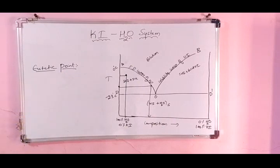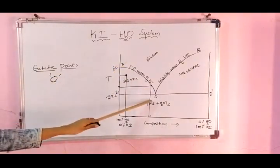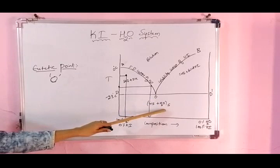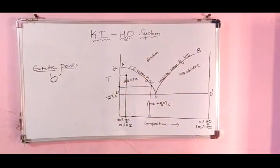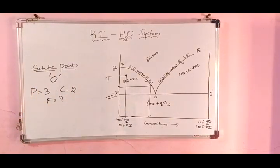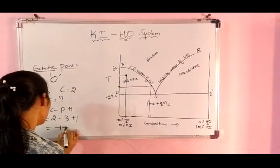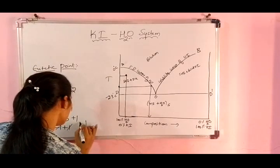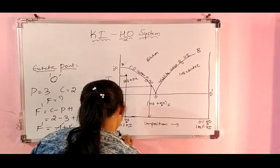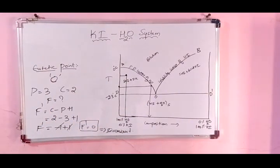Finally, the eutectic point O is formed by the intersection of curves AO and BO. At this point, three phases are in equilibrium: KI in solid form, H2O in solid form (ice), and solution. So P = 3, C = 2. Applying the reduced phase rule: F' = C − P + 1 = 2 − 3 + 1 = 0. F' = 0, which means it is an invariant system — no degrees of freedom are required. This completes the KI-H2O system.